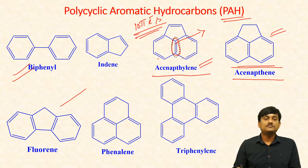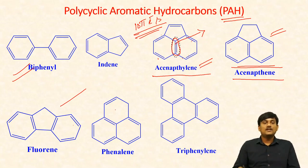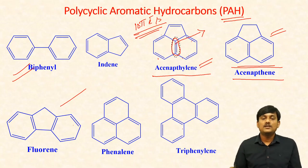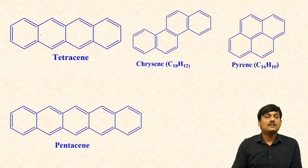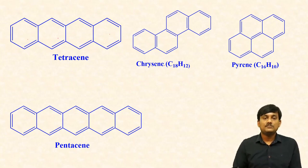And phenanthrene — it has three benzene rings. And triphenylene — here also four benzene rings are fused. This one is also aromatic. Chrysene — here also four benzene rings are fused. And pyrene — four benzene rings.